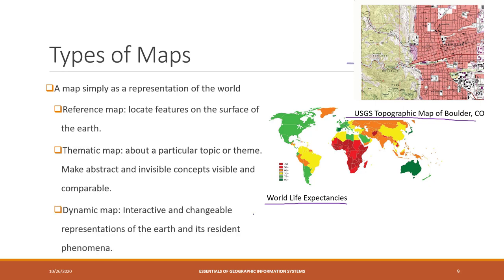Lastly, our textbook also talks about the dynamic map. A dynamic map can be a reference map, or the reference map can be a dynamic map, or the thematic map can also be a dynamic map. This means the map is interactive and you can change the representations of the earth and all its contents.